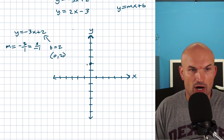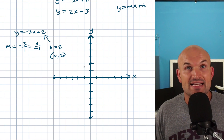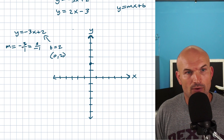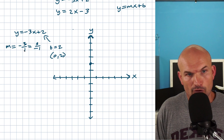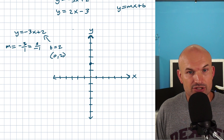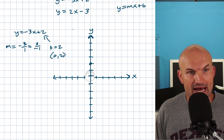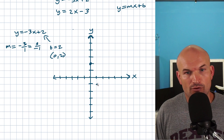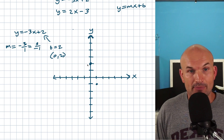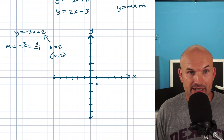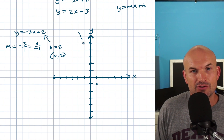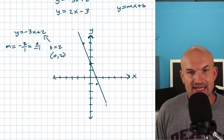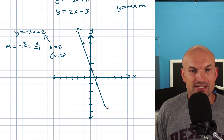From the y-intercept, we follow our slope in either the positive or negative direction. With slope negative 3 over 1, going down 3 units and to the right 1 takes us to a second point. Alternatively, going up 3 and to the left 1 also works. You only need two points to draw your line. Connect those points and our first line is graphed.